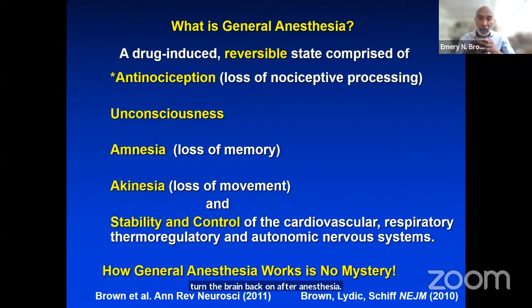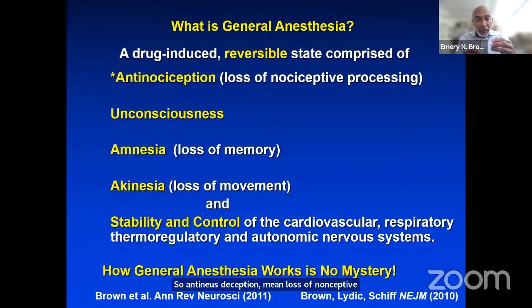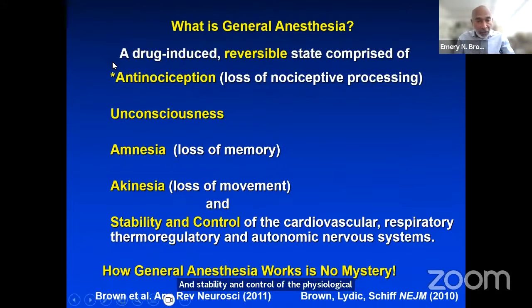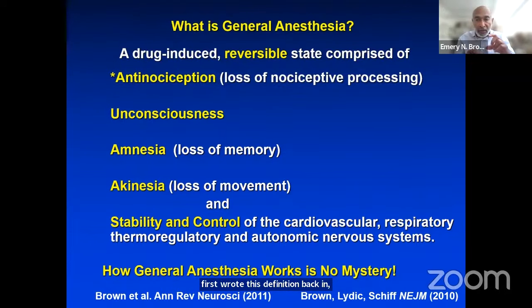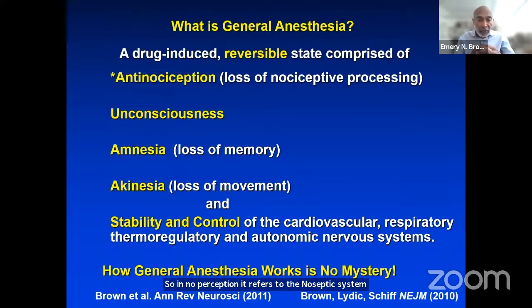What is general anesthesia? It's a drug-induced reversible state consisting of four conditions: antinociception — meaning loss of nociceptive processing — unconsciousness, amnesia, akinesia, and stability and control of the physiological system. I started with antinociception because when I first wrote this definition back in 2010 in a New England Journal article, I said analgesia. But analgesia refers to pain — a conscious percept. Nociception refers to the nociceptive system being active even when someone's unconscious, so we must achieve antinociception.